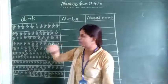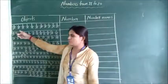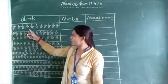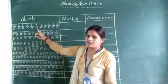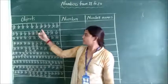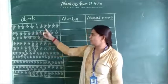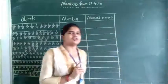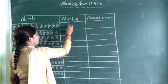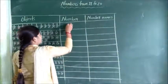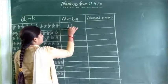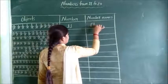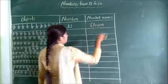Let's count: 1, 2, 3, 4, 5, 6, 7, 8, 9, 10, 11. How many stars? 11 stars. We have to write the name. 11 — E, L, E, V, E, N. 11. Eleven.